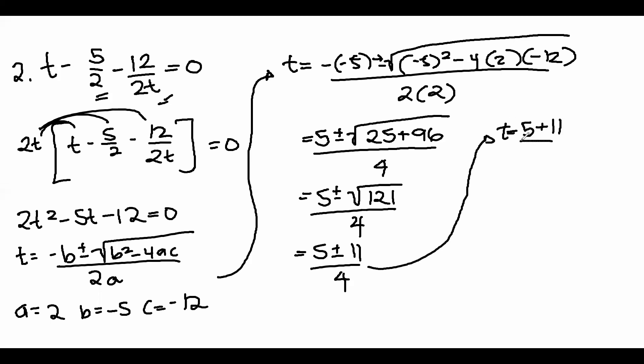For our first root, we have 16 over 4, which is equal to 4. And for the second root, we have negative 6 over 4 or negative 3 over 2. Therefore, the roots of the equation are 4 and negative 3 over 2.